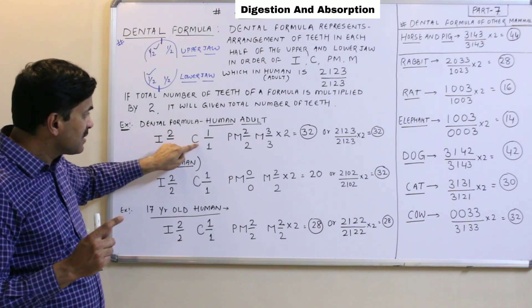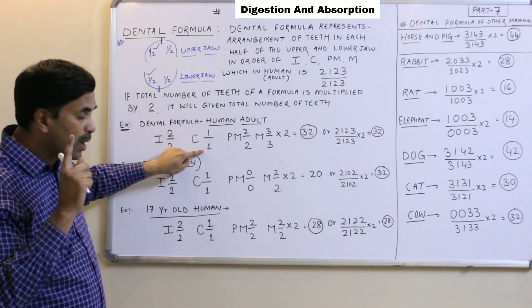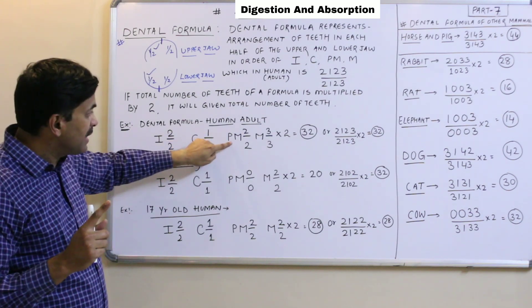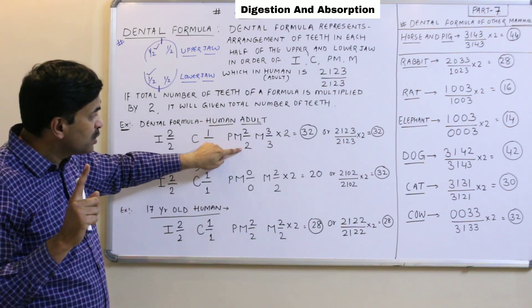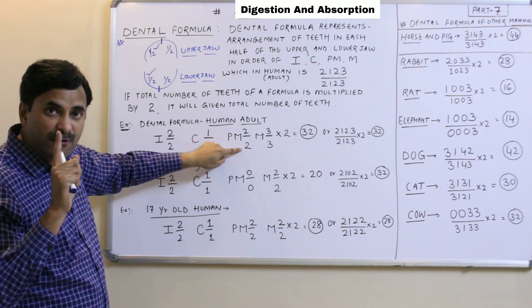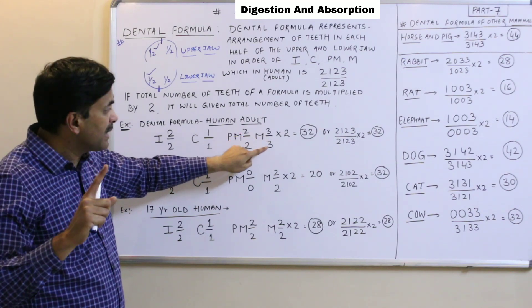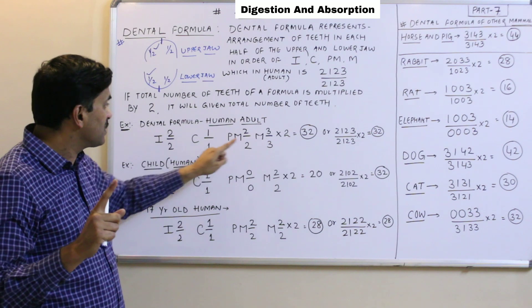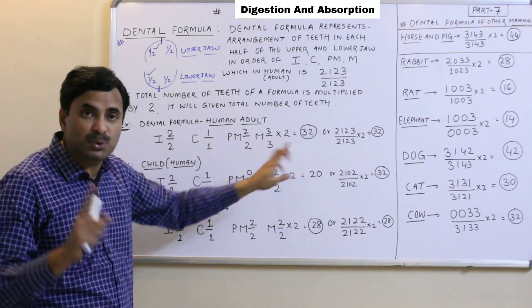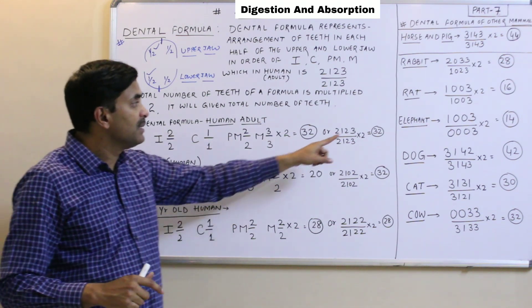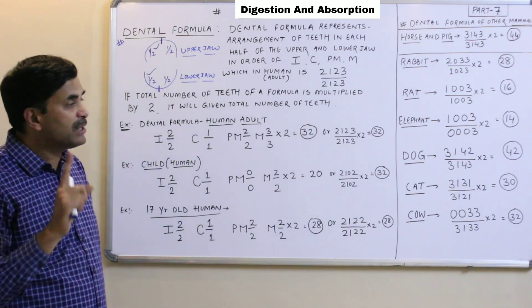Similarly, canines: 1 canine in one half of the upper jaw and 1 canine in one half of the lower jaw. Premolars: 2 in one half of the upper jaw and 2 in one half of the lower jaw. Molars: 3 in one half of the upper jaw and 3 in one half of the lower jaw. So the formula comes to 2, 1, 2, 3 upon 2, 1, 2, 3 into 2, giving a total of 32 teeth.